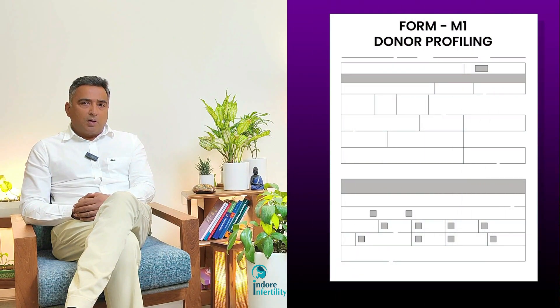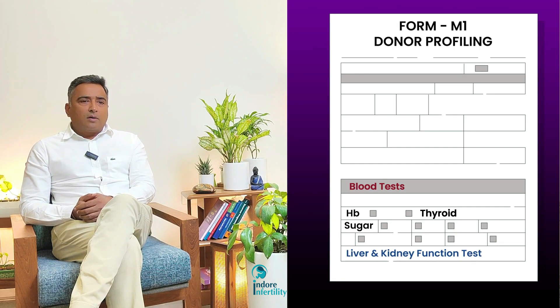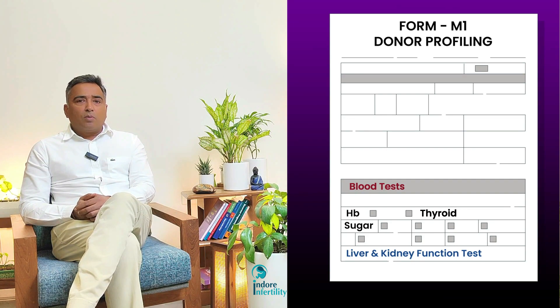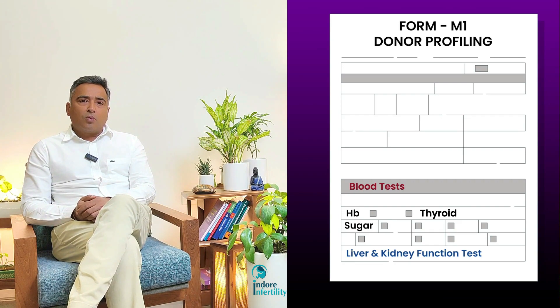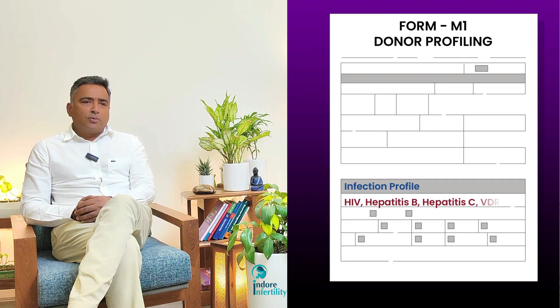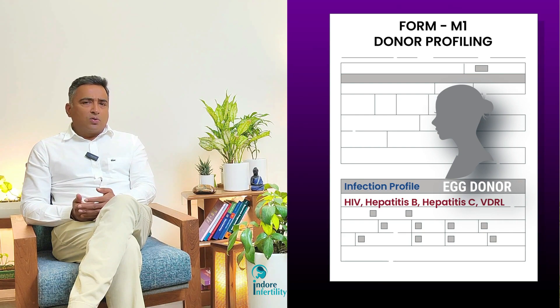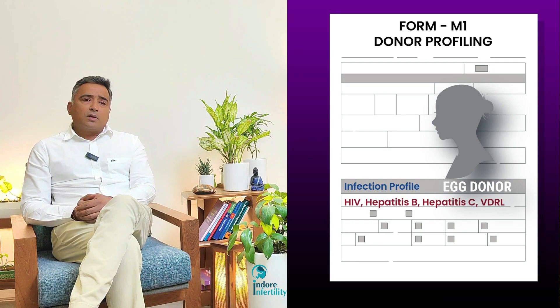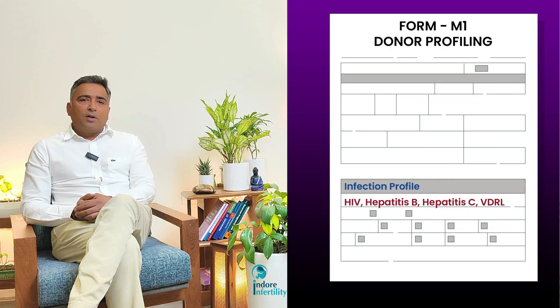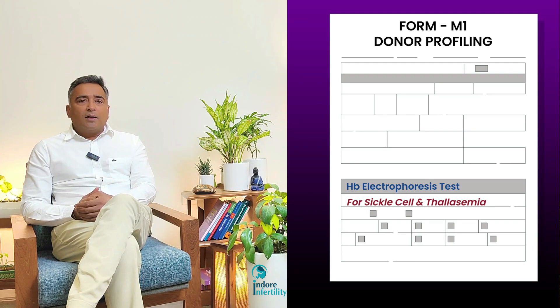What tests are done on the egg donor to check her health? There is a Form M1 in the current ART Act booklet which clearly specifies which investigations are mandatory before a donor is recruited. These include basic investigations like hemoglobin, blood sugar, liver function tests, kidney function tests, and sonography. There are also specific infection screens for HIV, HBsAg, Hepatitis, HCV — the hepatitis C virus — and syphilis, all of which must be performed on any donor.